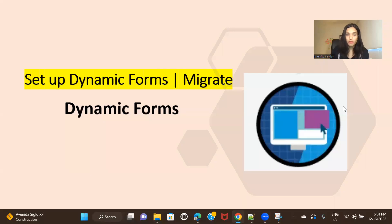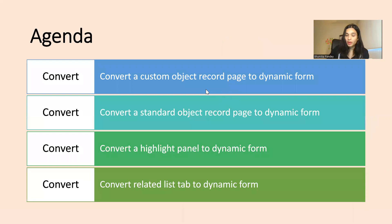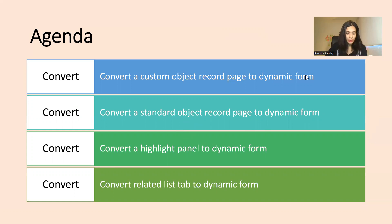Hello everyone, welcome back to another video of the dynamic forms series. In this one, we are going to see how to migrate or set up dynamic forms for different kinds of objects such as standard objects and custom objects. We'll also see if we can migrate the highlight panel or the related list section. Let's have a look at the agenda for this session.